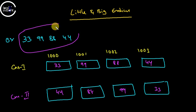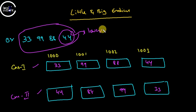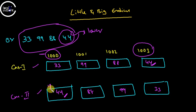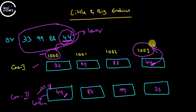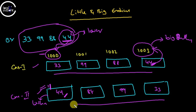Or I can store it the other way: 44, 88, 99, 33 — this is case 2. So for a number like this, we can store it either way. If the lower byte is stored in the lower address, as in case one, it is called little-endian. Whenever the lower byte is stored in the higher address, it is called big-endian.